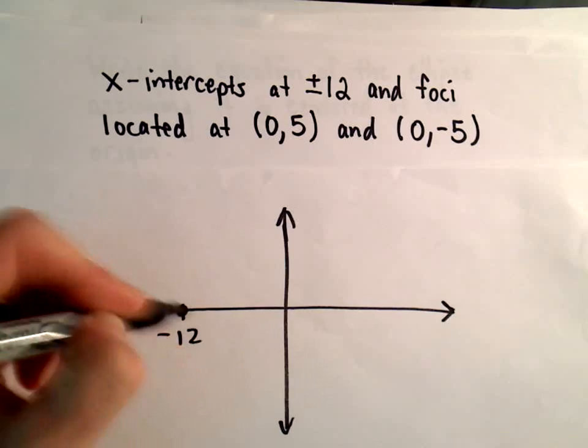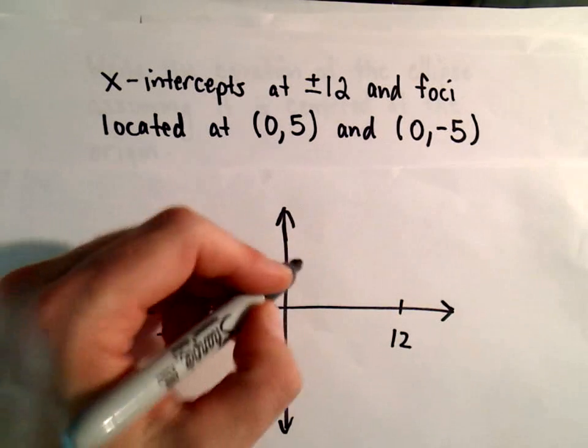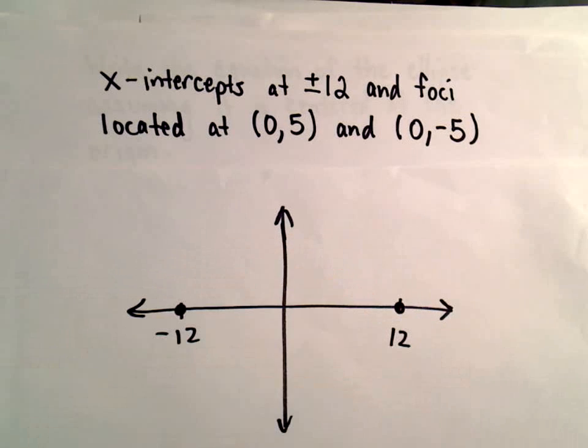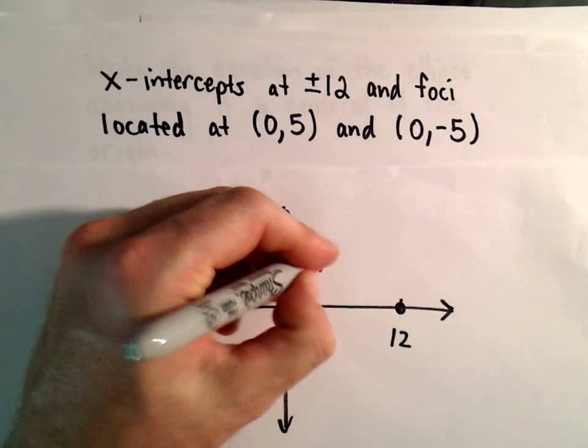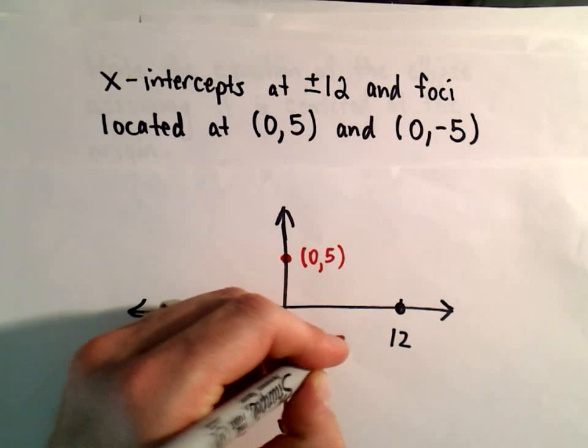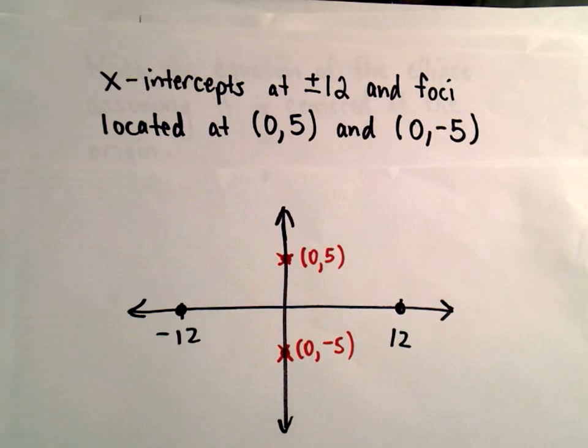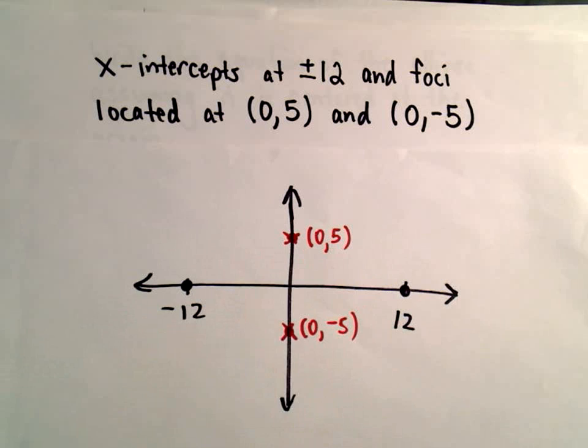Also negative 12, and positive 12. The foci are gonna be located at (0,5) and (0,-5). So there's a foci—again, that's not a point on the graph at all. Sometimes I use little X's or some kind of indication that hey, that's not a point, but a lot of people use points.